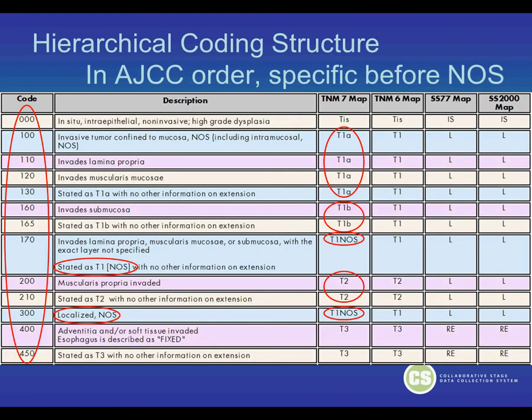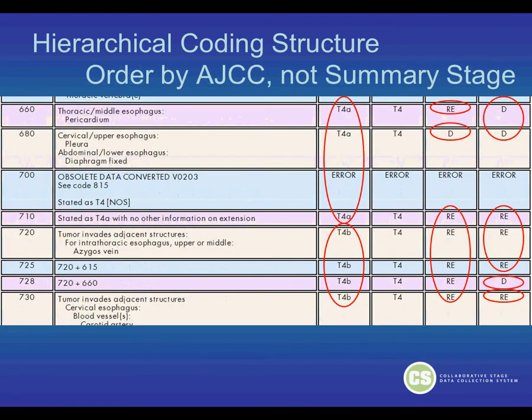As you can see here, the codes are in AJCC order — the specific before the NOS. The codes on the left go from 000 through 450. In the AJCC 7 mapping column, we have T1A, then T1B, then the T1 not otherwise specified, then T2, then the T1 NOS which maps to a localized NOS. This shows the order by AJCC and not by Summary Stage.